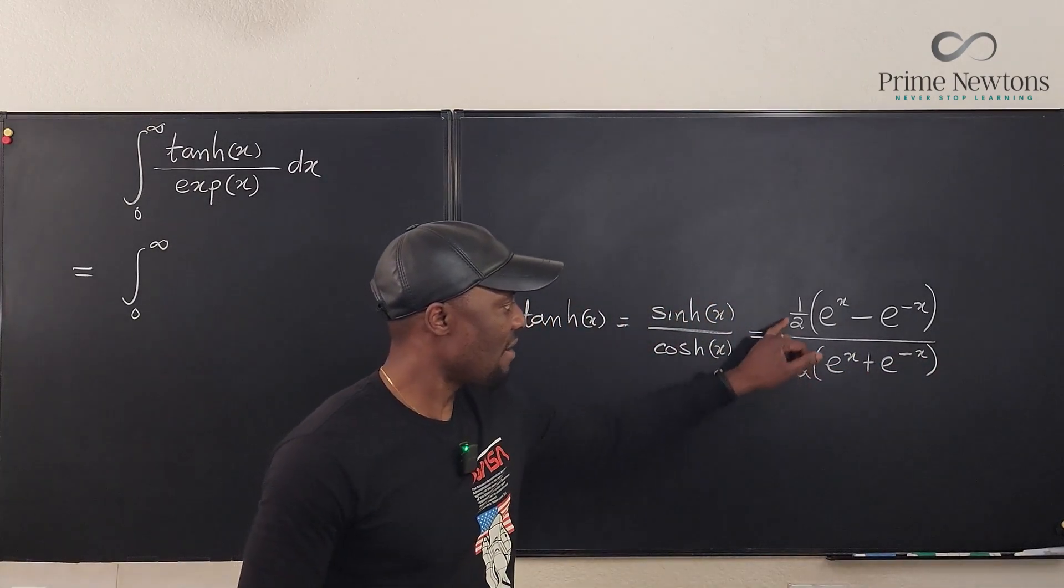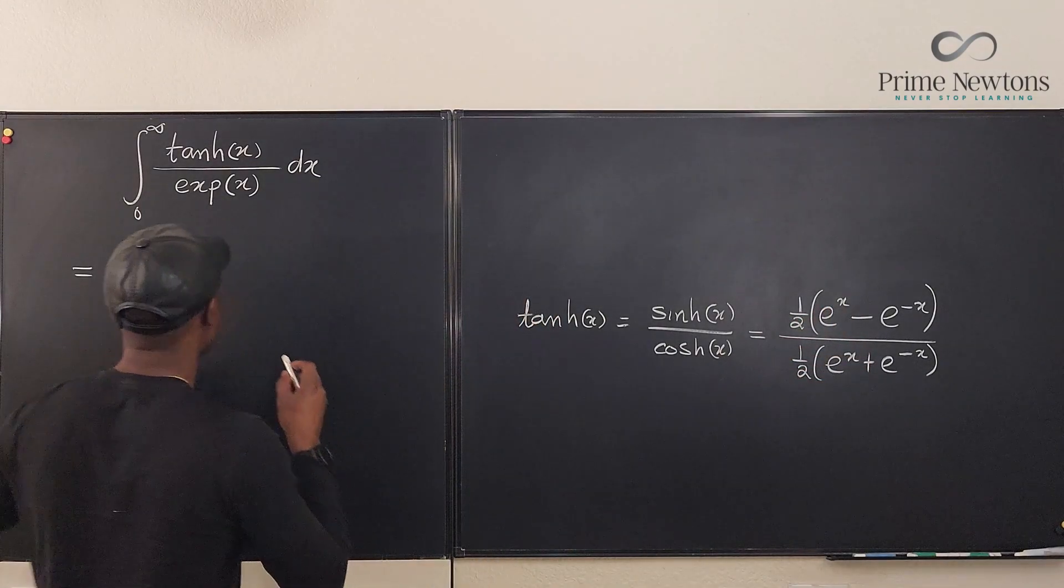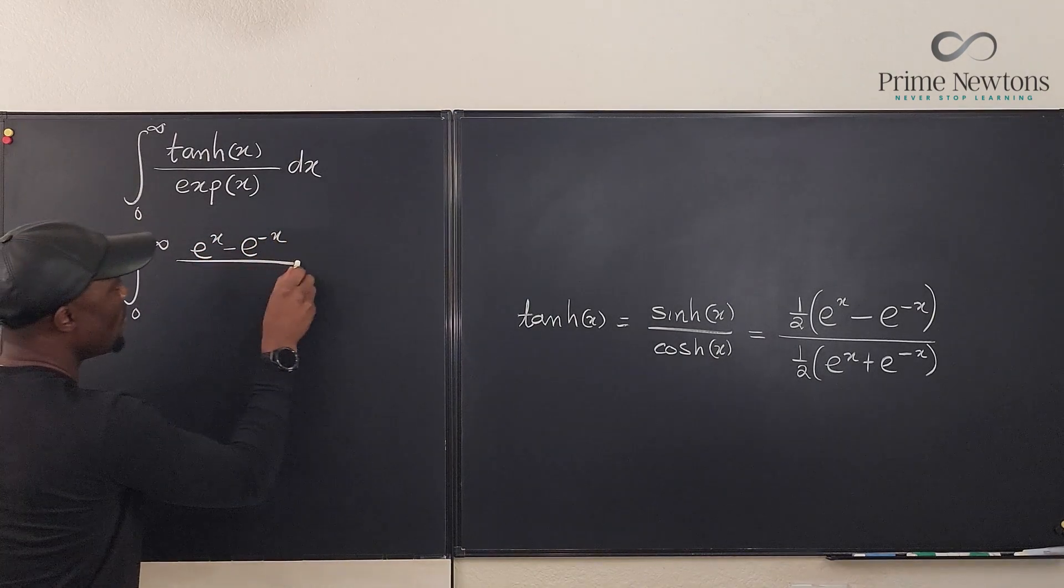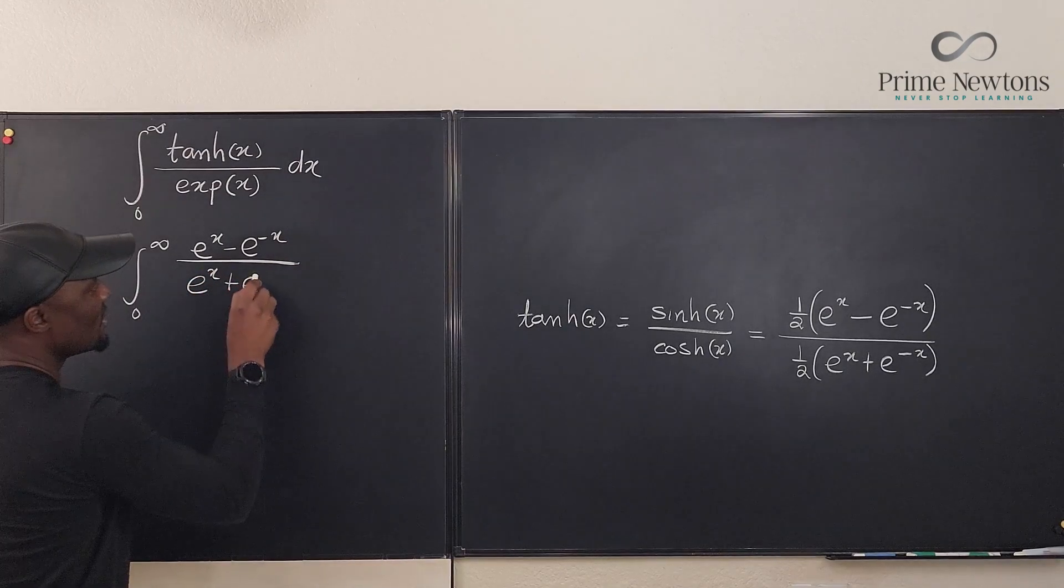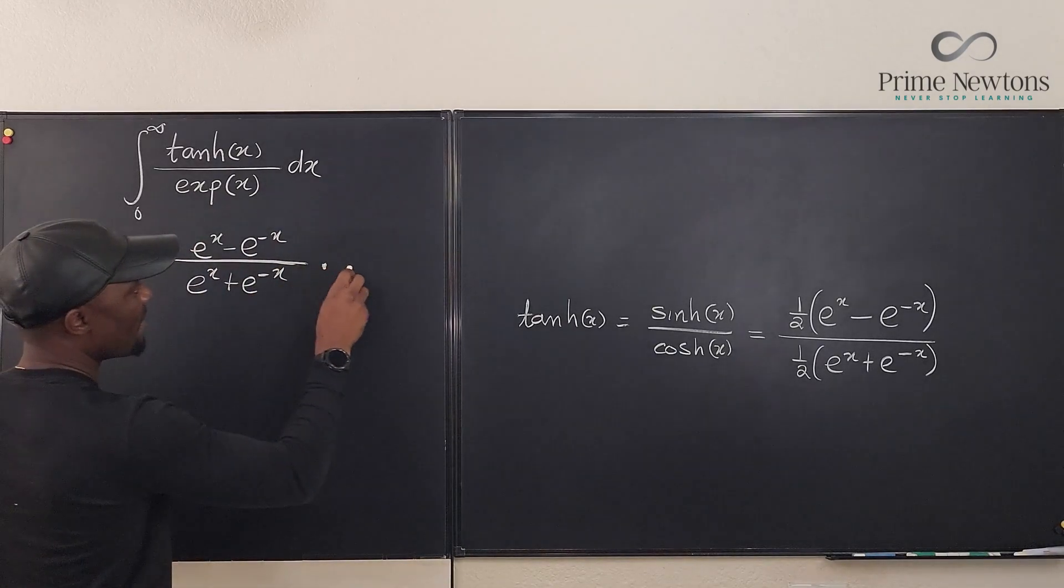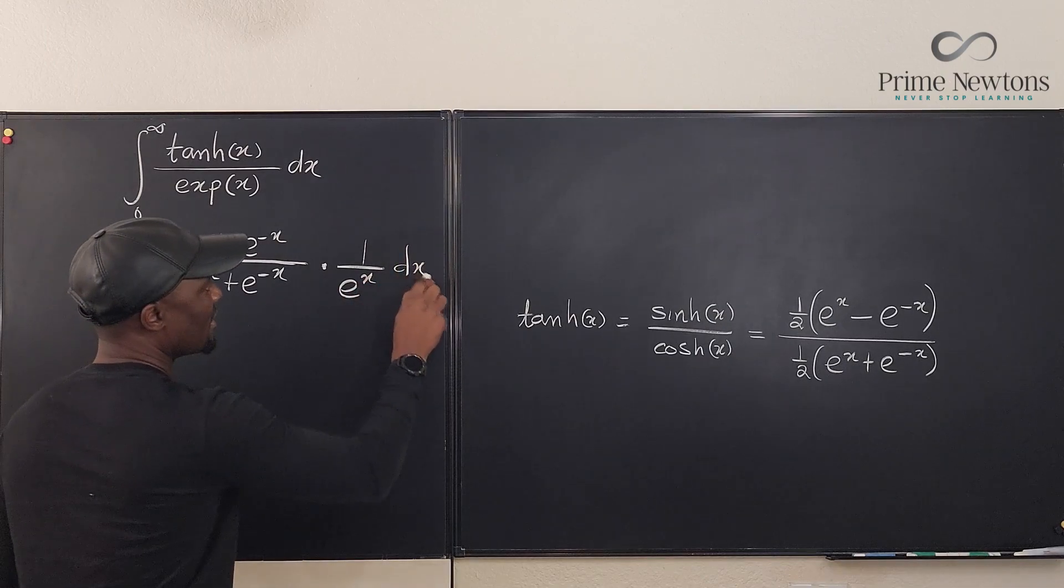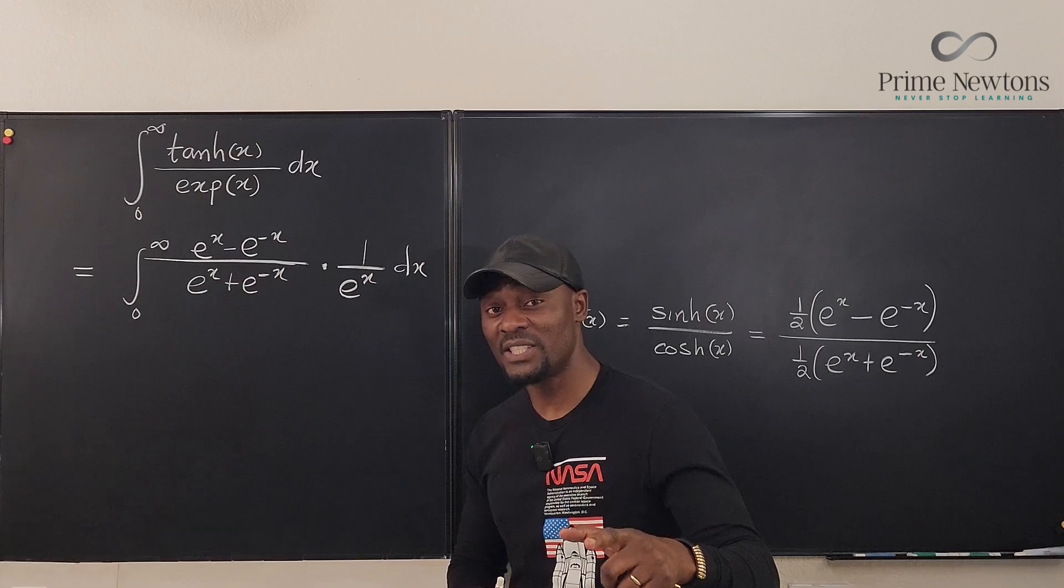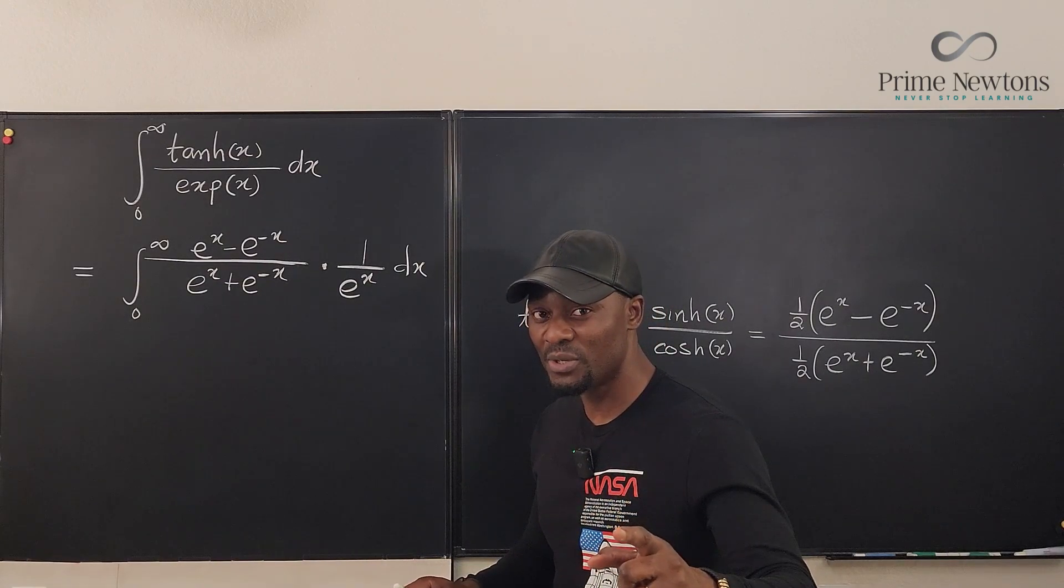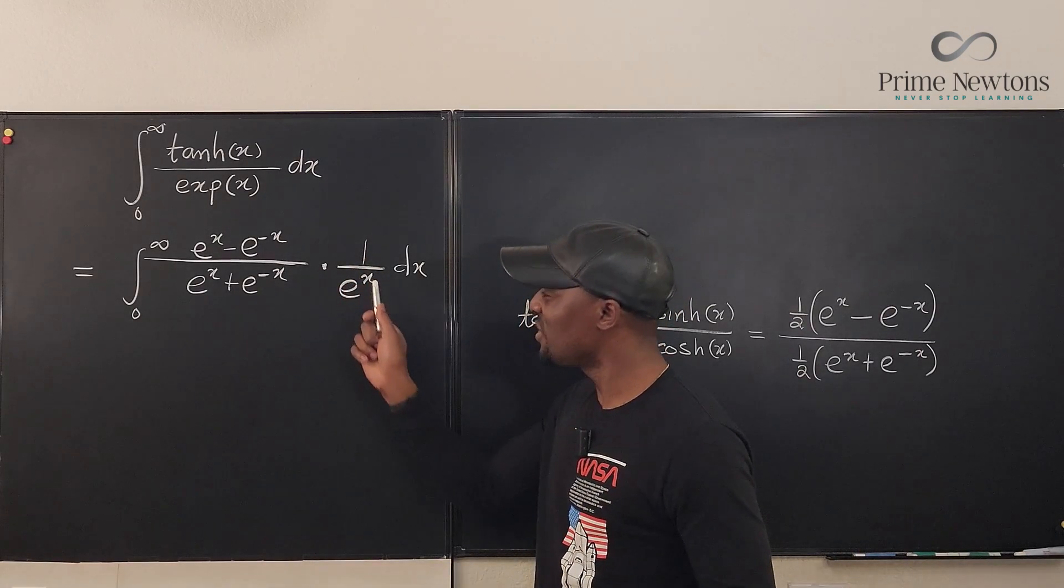So the integral we have is actually e to the x minus e to the negative x over e to the x plus e to the negative x times one over e to the x. Let's leave it this way. Now there's a very quick strategy that I would recommend and it is to make a u substitution. How do I know I should do a u substitution at this point? Because I see one over e to the x.